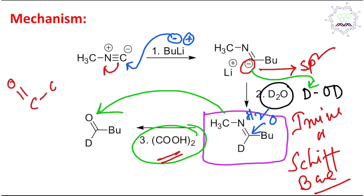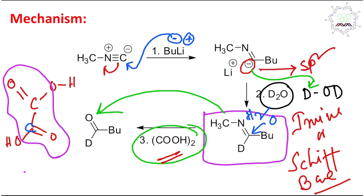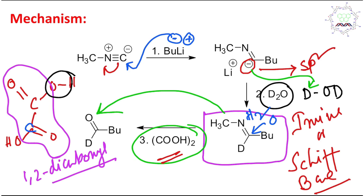Why is oxalic acid strong enough to carry out this hydrolysis? Because oxalic acid is the first member of the dicarboxylic acids, and the two carboxylic acid groups are directly attached to each other — forming a 1,2-dicarbonyl system. Both carbonyl groups are electron-withdrawing in nature, which greatly enhances the acidity of the OH groups, making oxalic acid strong enough to hydrolyze the imine.